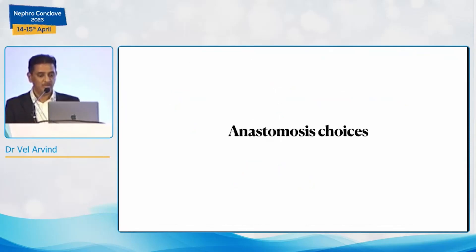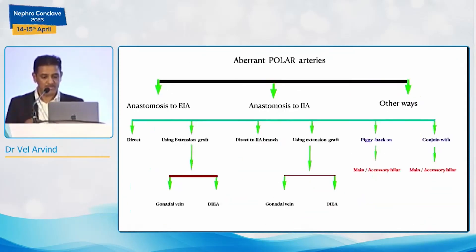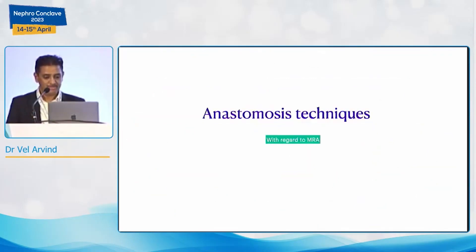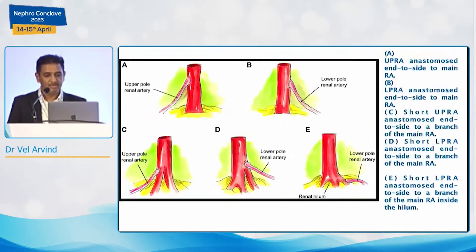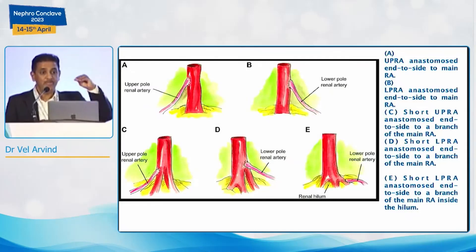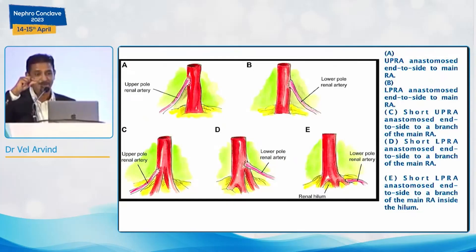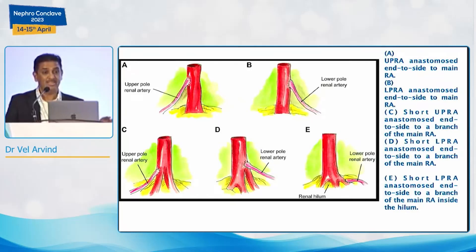The definition of multiple arteries: anything more than one is multiple in a donor. Even an early bifurcation of a single artery becomes multiple. We call it the main renal artery; then extra-renal main artery, which again splits into accessory and aberrant — the only one going to the pole is called aberrant polar artery. For surgical technique: vein to vein to external iliac vein — nowadays we don't sacrifice any vein.